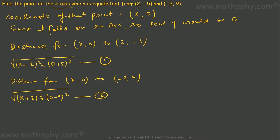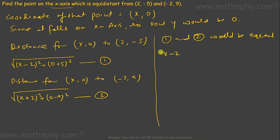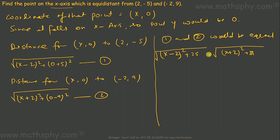Now it says this point is equidistant from the two given points, meaning equation 1 and equation 2 would be equal. So: square root of (x minus 2) whole square plus 25 equals square root of (x plus 2) whole square plus 81. The square roots can be cancelled by squaring both sides, giving: (x minus 2) whole square plus 25 equals (x plus 2) whole square plus 81.